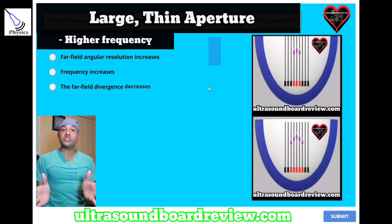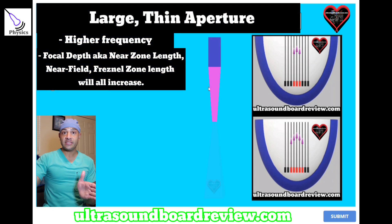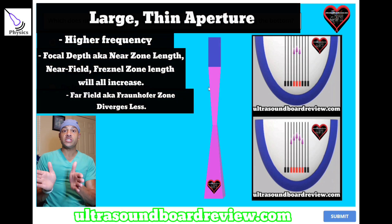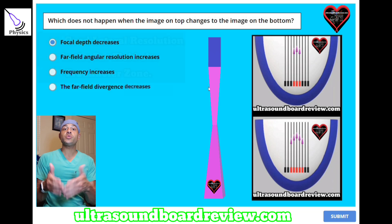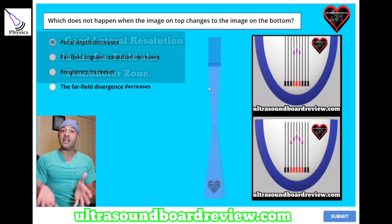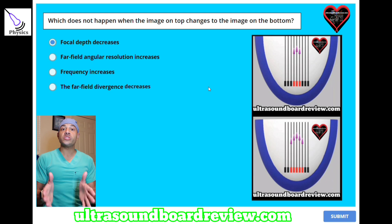When you use a large crystal, your focal depth increases, thus causing your far-field to diverge less. This will increase your lateral resolution. Instead of switching out small and large crystals into a transducer, we use a dynamic aperture.